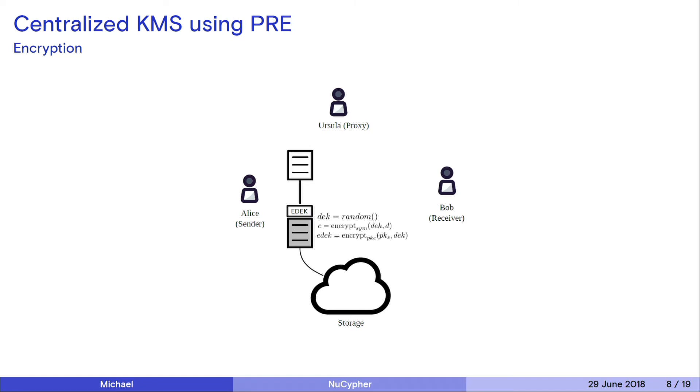We interface everything as a key management system. Alice encrypts a file with a symmetric key, and the symmetric key is encrypted with her public key. She uploads that to some cloud or decentralized storage. When she wants to grant access, she creates the re-encryption key and gives it to the proxy or a network of proxies. The recipient can fetch the data, ask to re-encrypt the encrypted symmetric key, and then decrypt the data with that symmetric key.